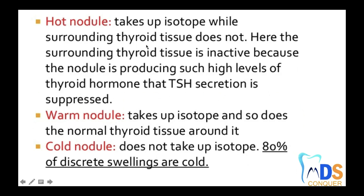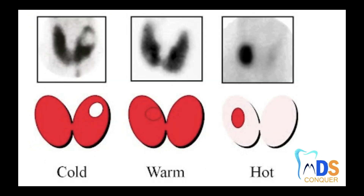Moving to the third category: the cold nodule is one in which the abnormal tissue does not take up the isotope. You can clearly appreciate here that the abnormal tissue is not going to take any sort of isotope. This is the key difference between cold, warm, and hot nodules.